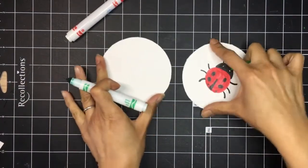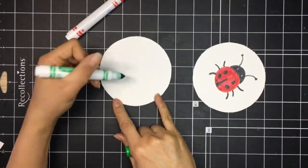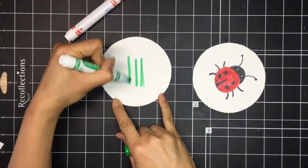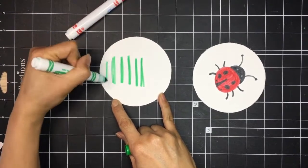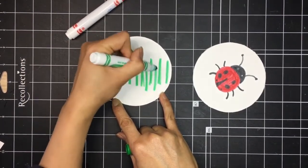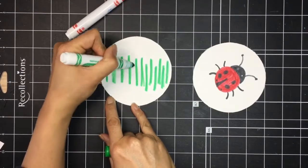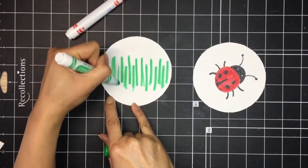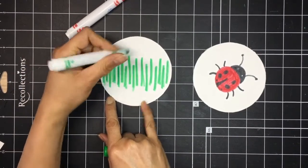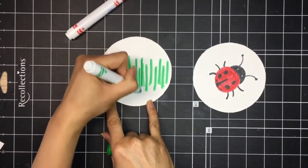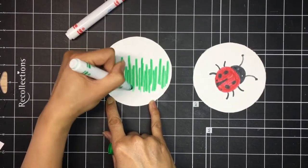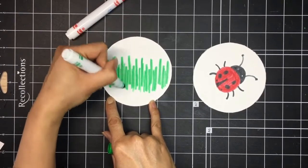On the other circle, you will make grass. With a green marker, you are going to draw individual blades of grass, drawing lines up and down. And then finish the rest of the grass by coloring in the bottom half of the circle with up and down strokes.